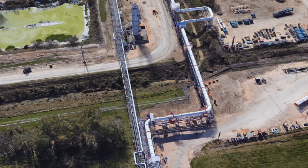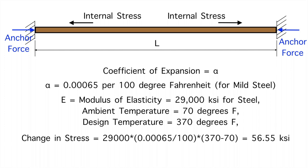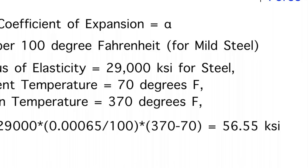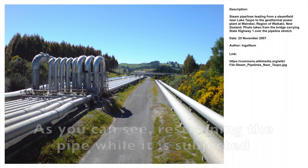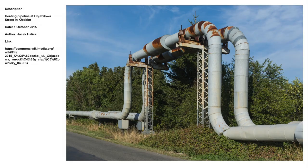Now, if you restrain axial movement at both ends of the pipe, the pipe will experience a change in stress. The change in stress is equal to E times alpha times delta T, where E is the modulus of elasticity, alpha is the expansion coefficient, and delta T is the change in temperature. The change in stress for a mild steel pipe when heated from 70°F is 56.55 KSI, as shown in this calculation. Note that 56.55 KSI is too high for an ordinary steel pipe — a carbon steel pipe has a yield strength of only 35 KSI. Restraining the pipe while it is subjected to changing temperatures can put it and its fittings in stress levels well beyond what it can take.